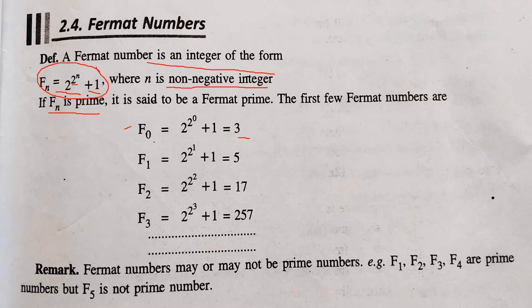If we take n is equal to 1, we get 5. If we take n is equal to 2, we get 17. If we take n is equal to 3, we get 257. These all are prime numbers and it is known as Fermat Prime.